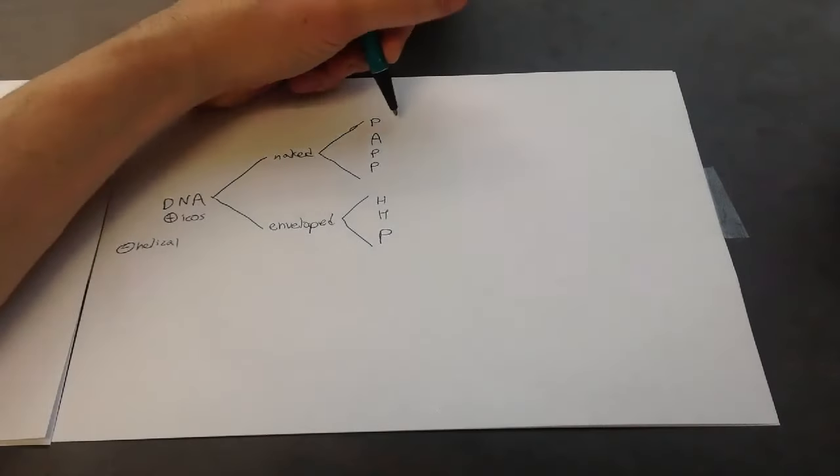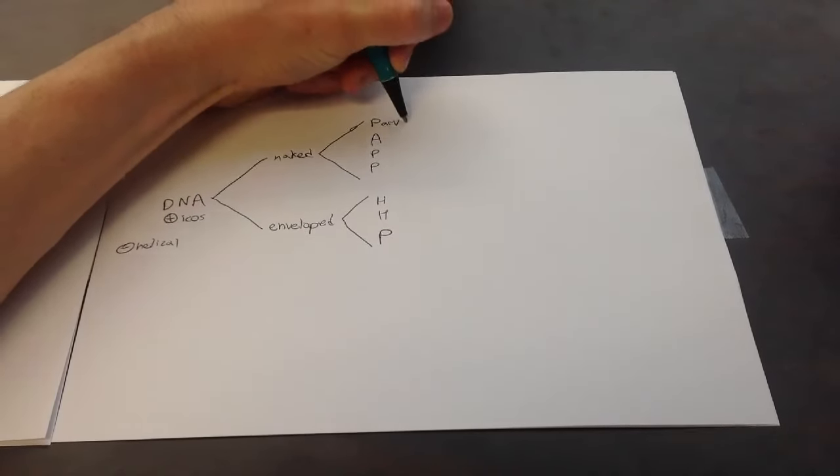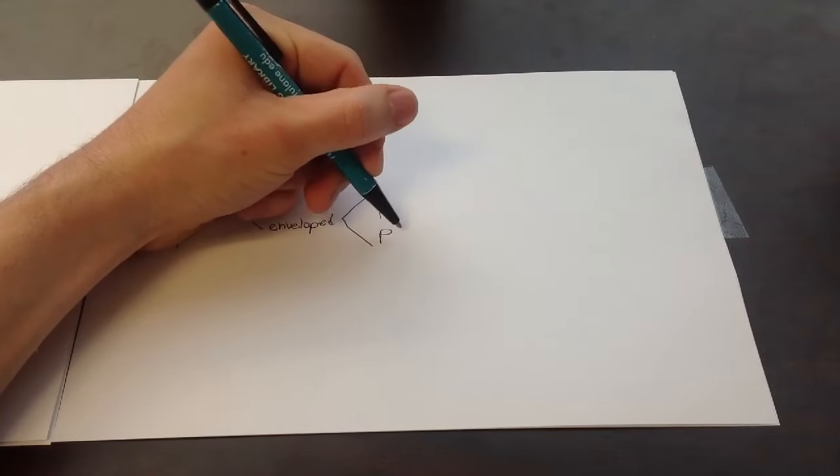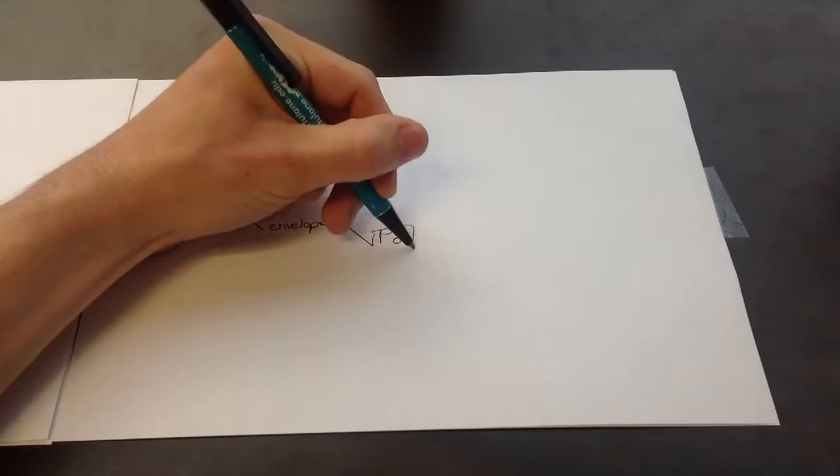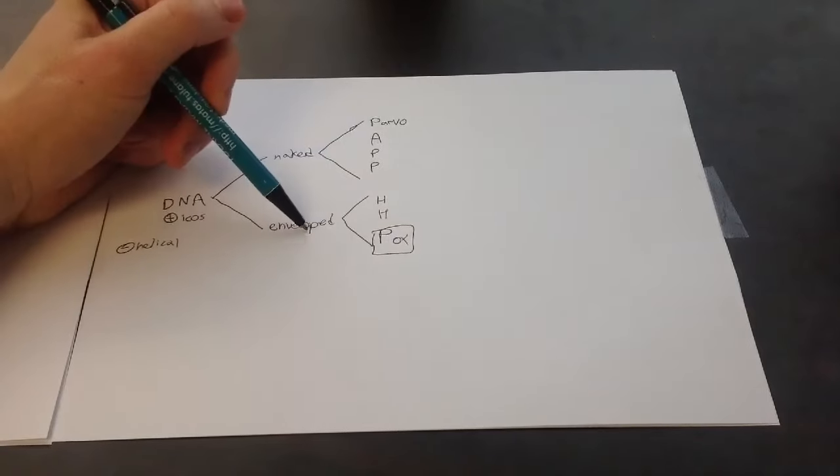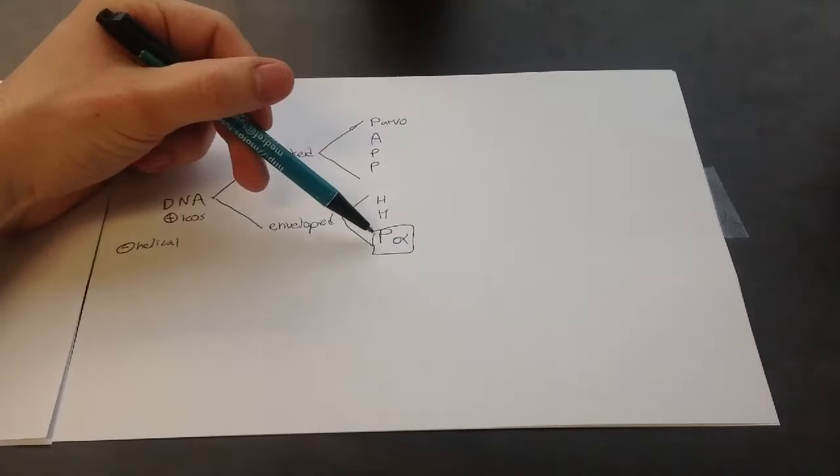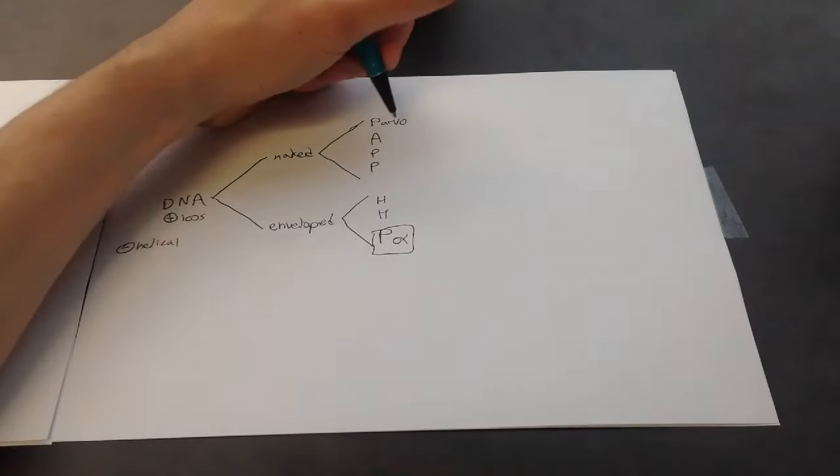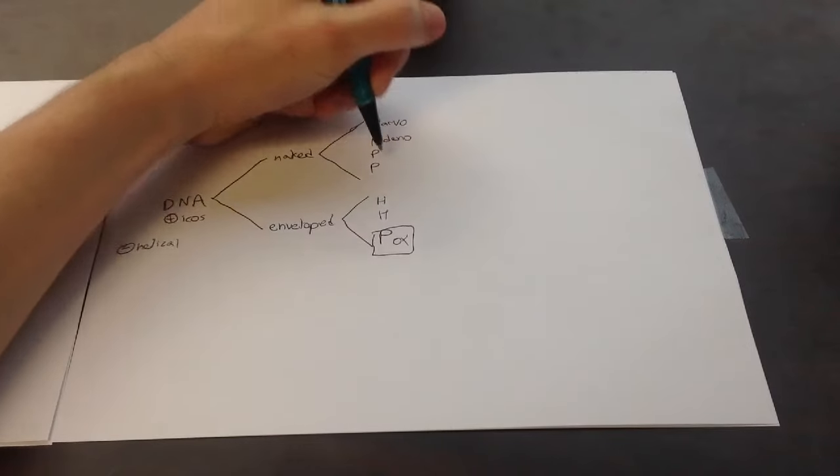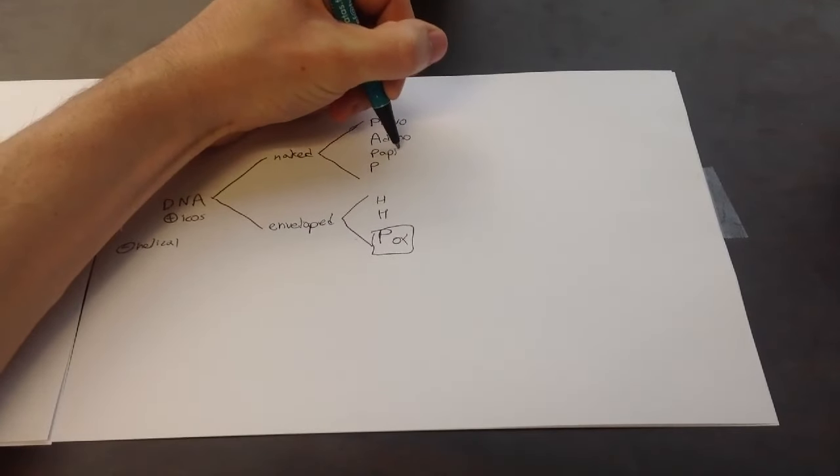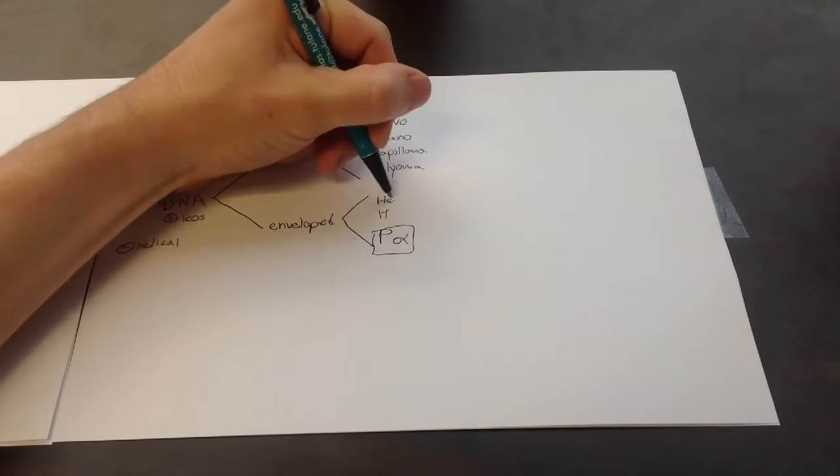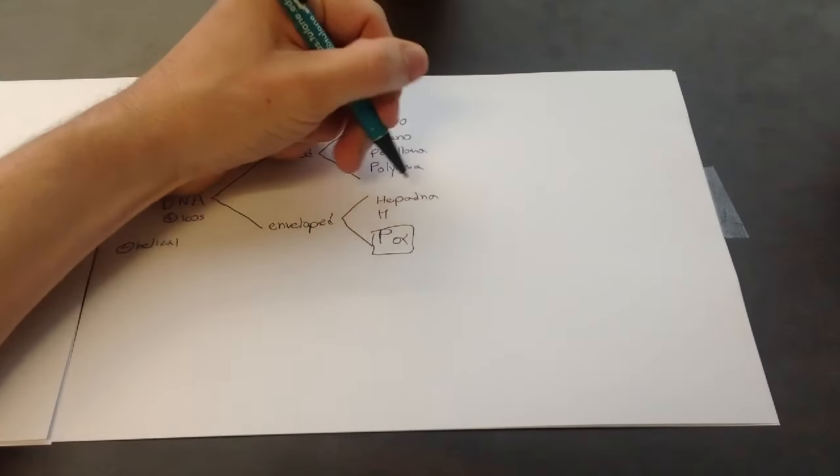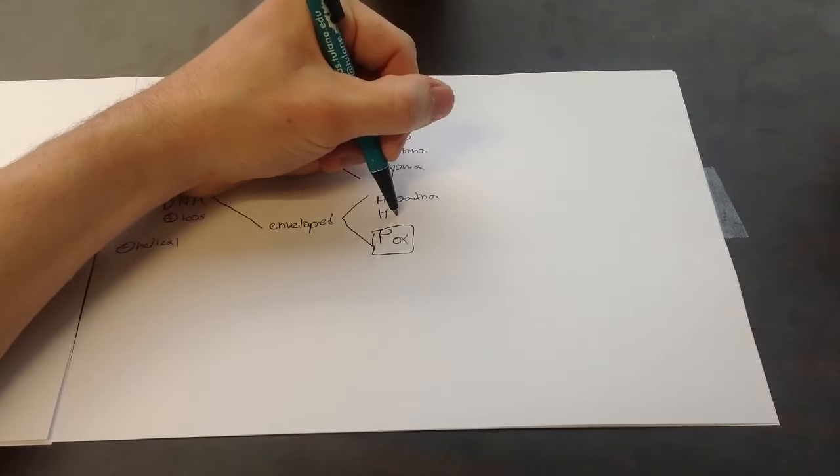So we start with the smallest DNA virus, and it's parvo. And then the largest DNA virus down here. That's pox. Pox is always in a box, so I draw a box around it. What I mean by that is pox's envelope is box-shaped. Then the rest of them are adenovirus, papillomavirus, polyomavirus, hepadnovirus, and herpesvirus.